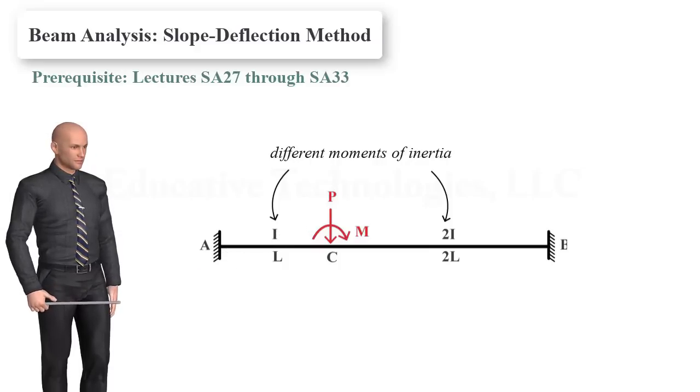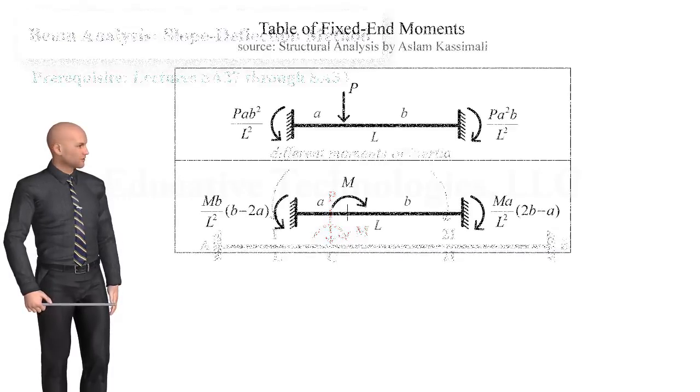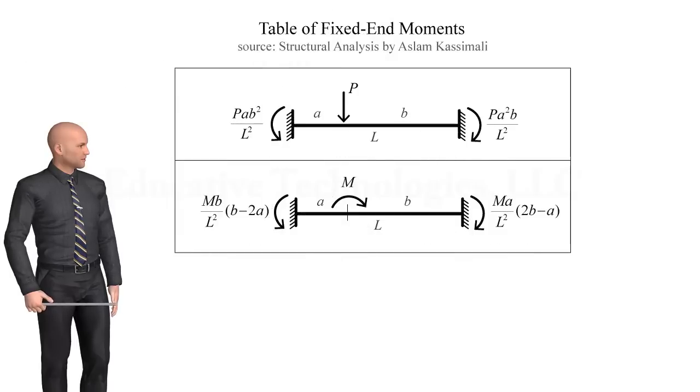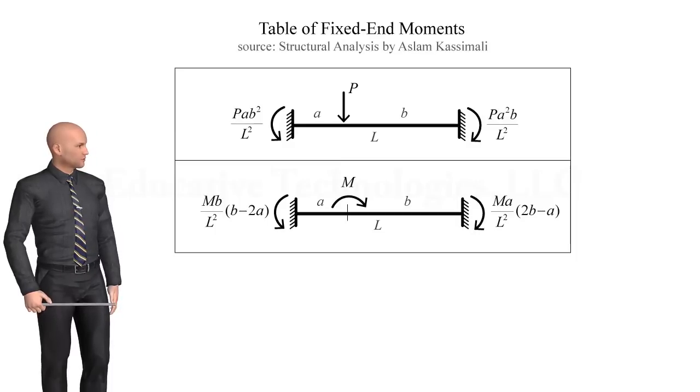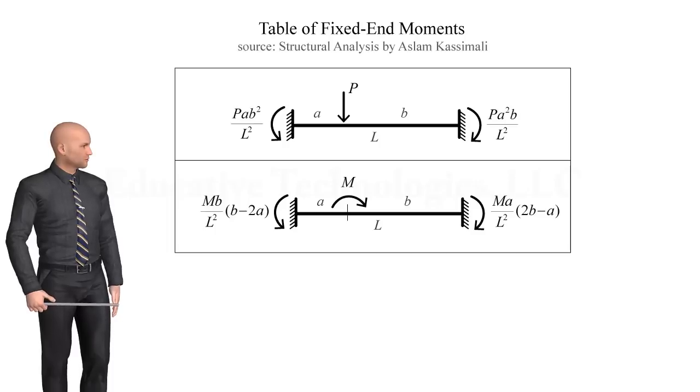If the beam had a constant moment of inertia, we would have been able to easily solve the problem using the table of fixed-end moments found in most structural analysis textbooks. Such a table has entries like these, in which the fixed-end moments are given parametrically, in terms of the position and magnitude of the applied load.